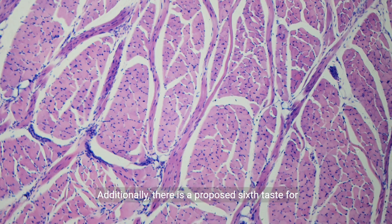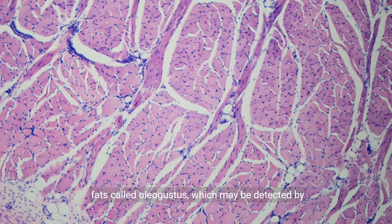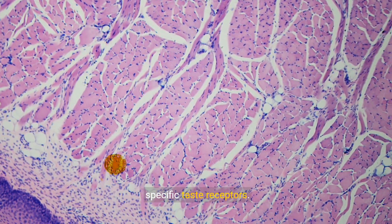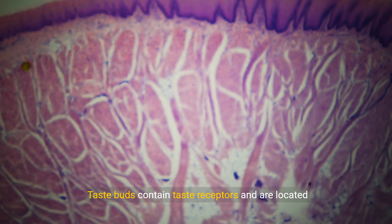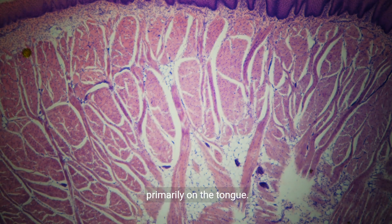Additionally, there is a proposed sixth taste for fats called oleogustus, which may be detected by specific taste receptors. Taste buds contain taste receptors and are located primarily on the tongue.